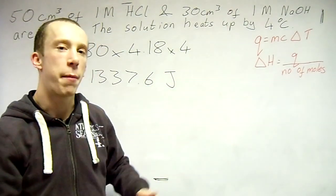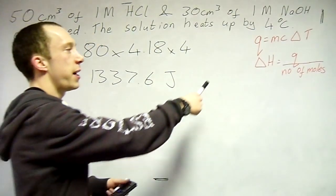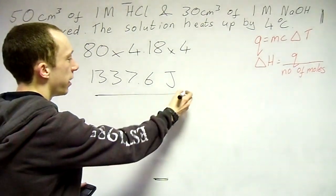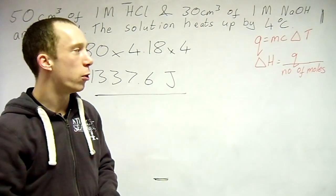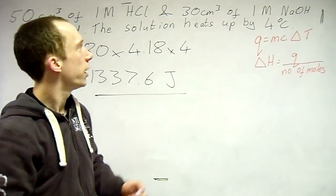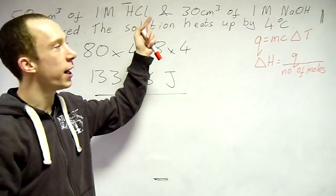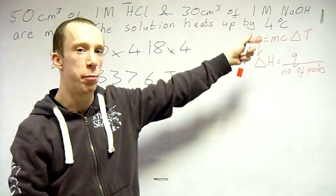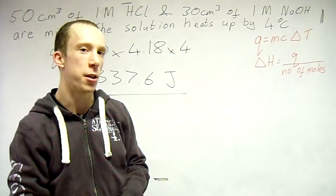Now next step, the enthalpy change. So delta H. So we've got the answer to this divided by a number of moles. Which? Is it the moles of the hydrochloric acid? Is it the moles of the sodium hydroxide? Is it the moles of both of them combined? Think about it.